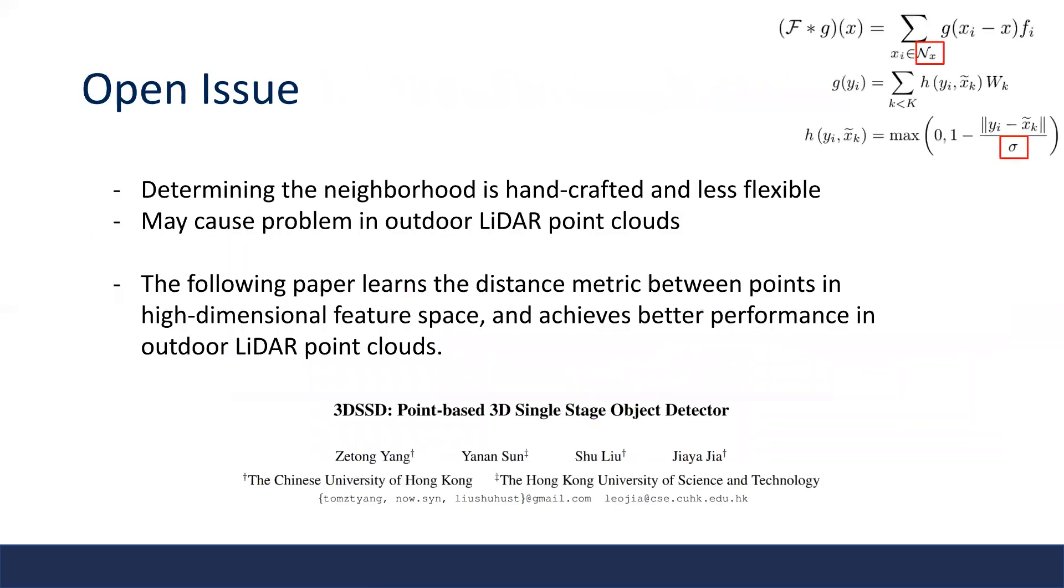In my opinion, one open issue of KPConv is that the way to determine the neighboring points is kind of handcrafted and less flexible. In particular, the neighborhood is defined as a uniform-sized 3D ball, and the weight of each neighbor inside the ball is defined as the relative distance controlled by a single hyperparameter sigma.